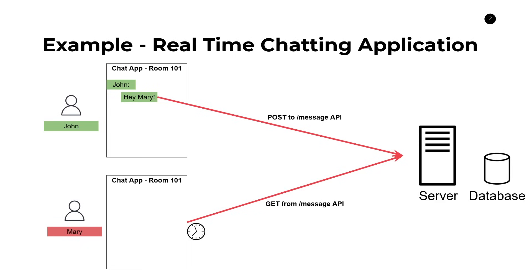It'll do this over and over again. So in this example, when John sends his message it goes to the server, gets stored in the database, and then Mary's application calls the GET API from the message endpoint to receive the updated set of messages and present that information on her chatting application. If you think about it, this is not a good approach. It turns out this is kind of an outdated approach, but people do use it because of its ease of use and reliability.